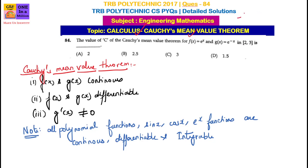The Mean Value Theorem has three types: the Rolle's Mean Value Theorem, Lagrange's Mean Value Theorem, and Cauchy's Mean Value Theorem.